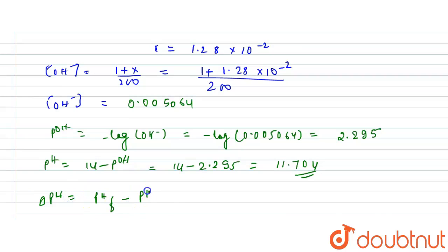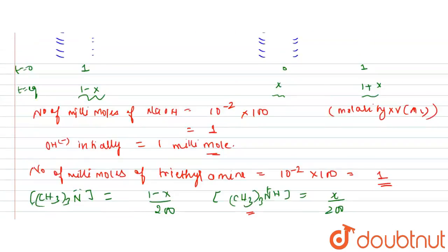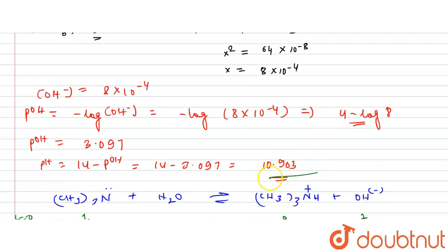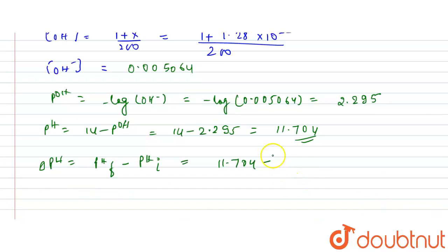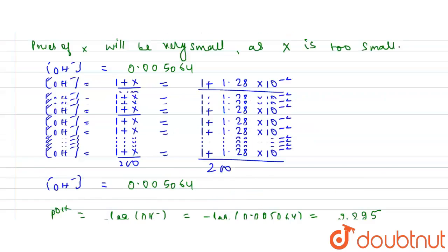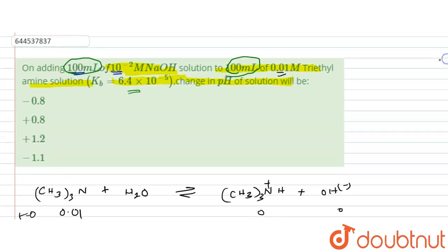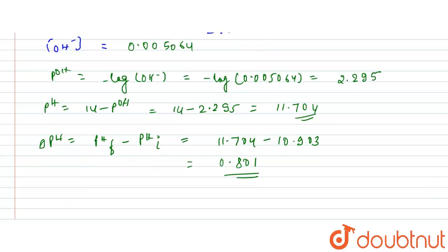The change in pH = pH_final − pH_initial = 11.704 − 10.903 ≈ 0.801. Checking the options, the nearest answer is +0.8, so option B is correct.